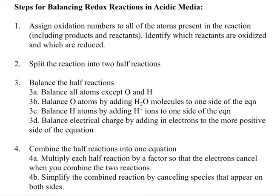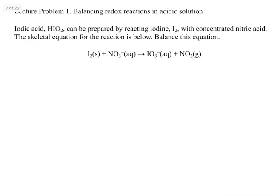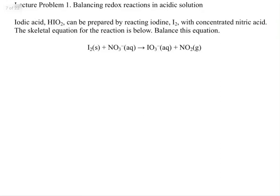Print out the 'Steps for Balancing Redox Reactions' page and have it on hand. Then as I go through it, you can look at the page and see what I'm doing relative to those steps. Let's look at the first question that involves balancing redox reactions in acidic solution. You're going to get an equation like: I2 plus NO3 minus gives IO3 minus plus NO2.